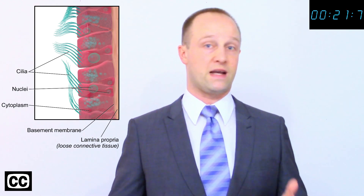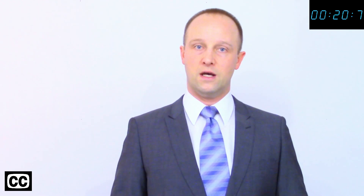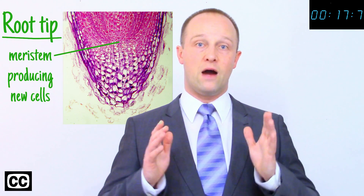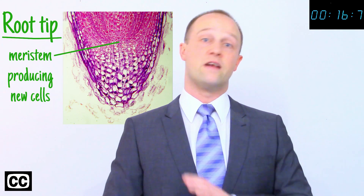Ciliated epithelial cells have tiny hair-like structures to sweep dust, bacteria, and mucus back out of the lungs. Unlike animals, many plant cells, found in the meristems, are able to differentiate throughout the life of the plant.